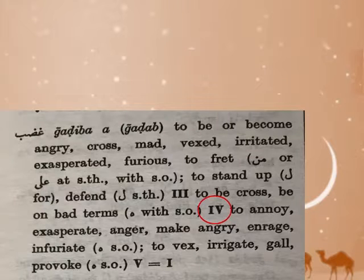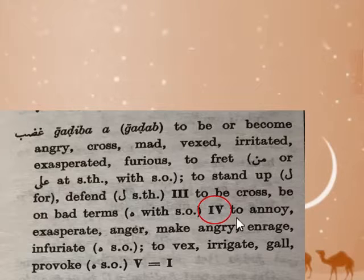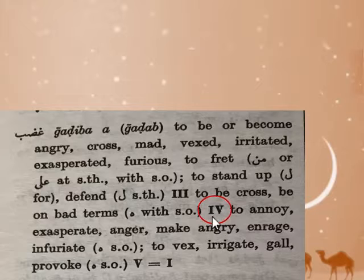Let's move on to measure four. If you remember, measure four had a lot of different meanings — one of them was causative. Remember measure two is causative, but four is also a fancier causative. Notice we don't have a two here, but we have a four. Read the definition: to make angry. Measure one is to be angry; measure four is to make angry. So measure four here has the very typical causative meaning, following the patterns perfectly.